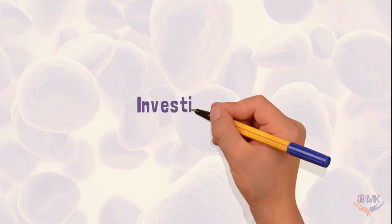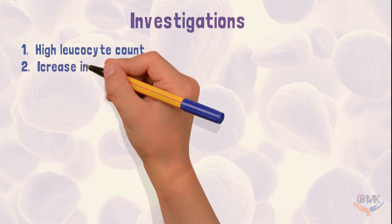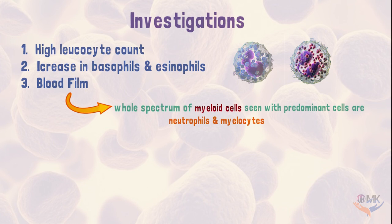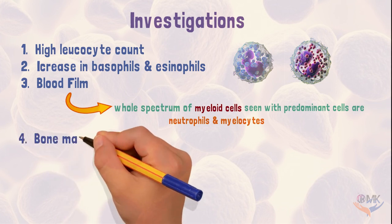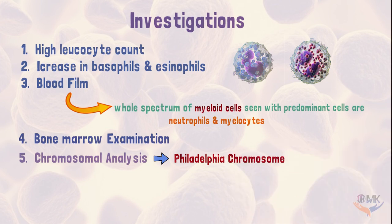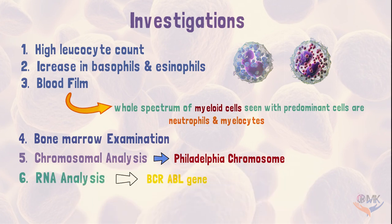The disease is diagnosed on the basis of high leukocyte count, increase in basophils and eosinophils. Myeloid cells, predominantly neutrophils and myelocytes, are seen on blood film examination. Bone marrow biopsy is done. Chromosomal analysis shows the Philadelphia chromosome, which is diagnostic of this disease. BCR-ABL gene is found on RNA analysis. BCR-ABL is a fusion gene formed by combination of the BCR and ABL genes, producing a tyrosine kinase protein that causes leukemic cells to grow and divide out of control.